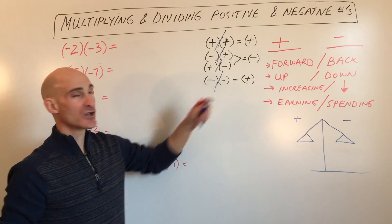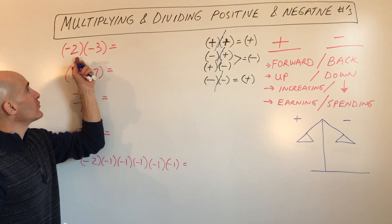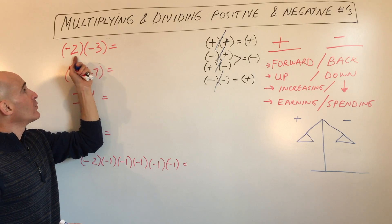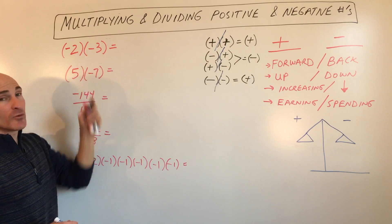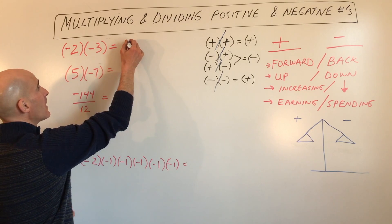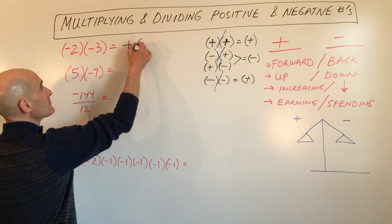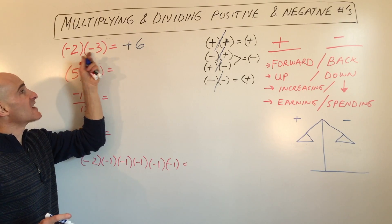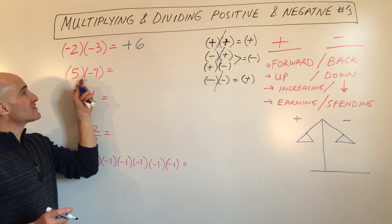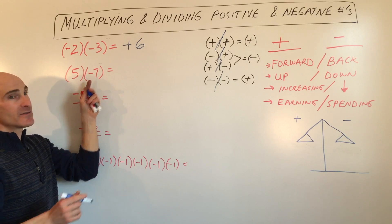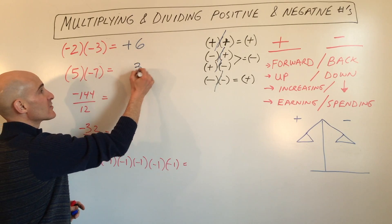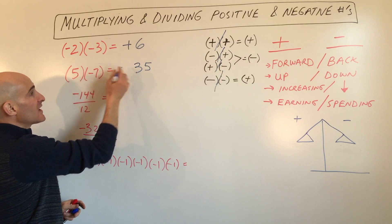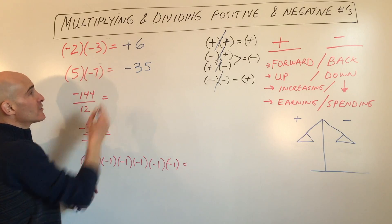We're going to do some examples. If you have negative 2 times negative 3, we have two negatives multiplied together, so that's going to give us positive 6. You just multiply the numbers and determine the sign. Here we've got positive 5 times negative 7. 5 times 7 is 35, but one's positive and one's negative, so that's negative 35.